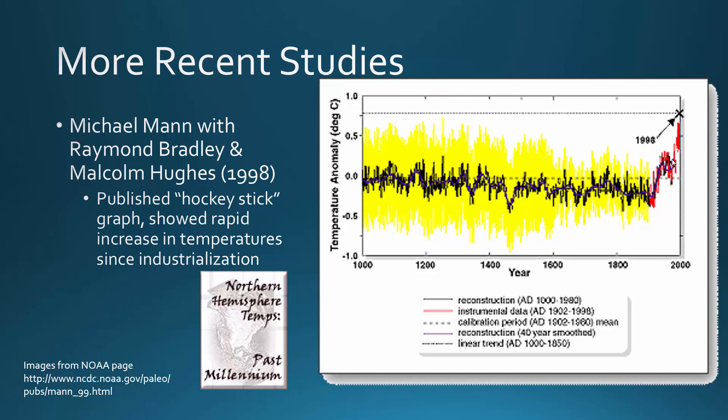You might say, well, how do they know what the temperature was in 1200 AD, for example? How do they know about this data? How did they get these numbers?